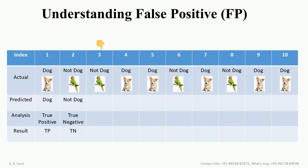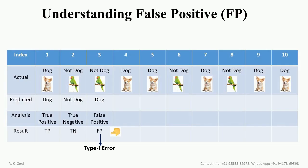Now let's try to understand false positive, that means FP. Consider case number 3 here. It's the parrot image, meaning it's 'not dog' in actual. Say it is predicted as dog. Because this is falsely predicted and predicted as positive, it is called as false positive, that is FP. False positive error is also called type 1 error. Type 1 error is just like saying there is a problem when there is actually not.